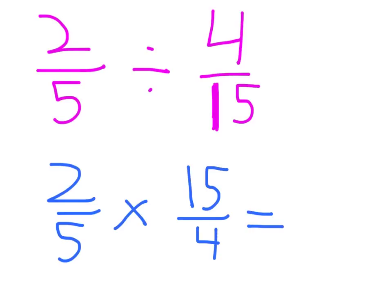We're going to multiply straight across and get two times fifteen is thirty over five times four is twenty.